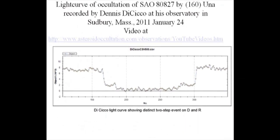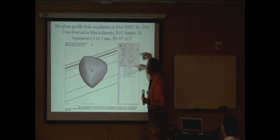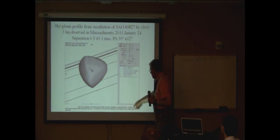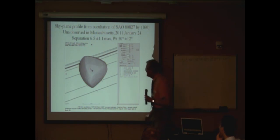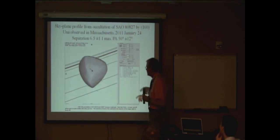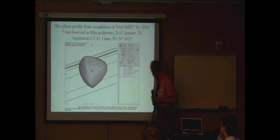This is the light curve of the Una occultation by Dennis DiKiko — the video you just saw. This shows the two components and the separation of 6 milliarcseconds plus or minus 1. Chord number 1 was left off to avoid conflict, but that was myself observing from Brattleboro, Vermont at about 2 degrees below zero. I'm not completely left out because I ran some remote stations, most of which froze up in the extreme cold, but one of them worked quite well right through the center of the asteroid and got a valuable chord at Holyoke, Massachusetts.